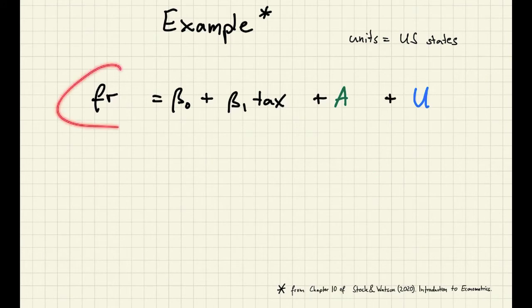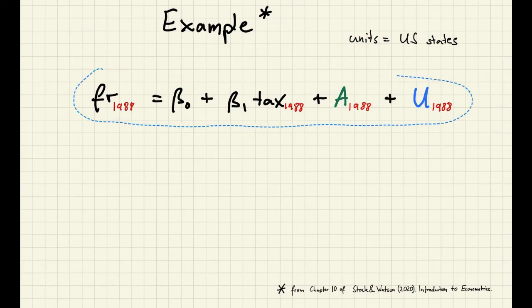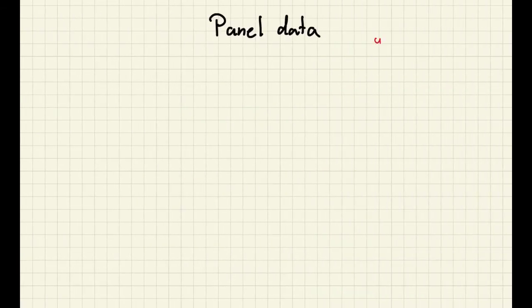Let's assume that we observe realizations from this model for every US state in the year 1988. Now what I have just described is a typical cross-sectional setting where we observe a model for lots of units at one particular moment in time. But now let's assume that we observe this model not only in 1988 but also in 1982. Observing one unit at two different time periods is what is called a panel data setting. In a panel data setting, we observe units i over time periods t.